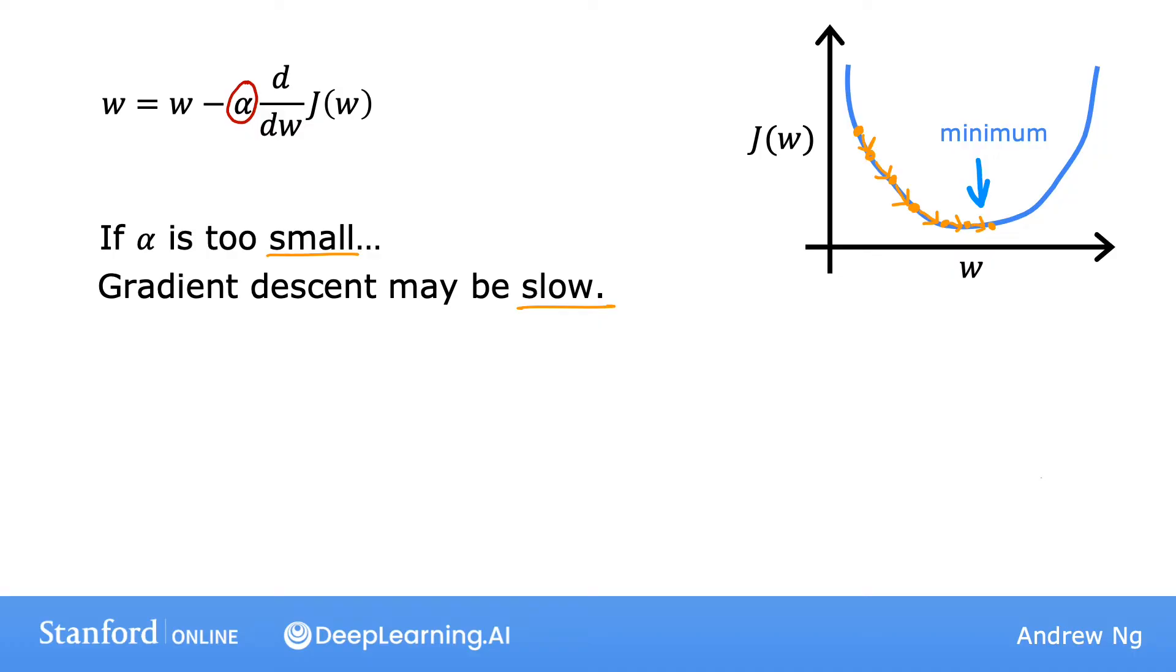Now, let's look at a different case. What happens if the learning rate is too large? Here's another graph of the cost function. And let's say we start gradient descent with w at this value here. So it's actually already pretty close to the minimum. So the derivative points to the right. But if the learning rate is too large, then you update w via a giant step to be all the way over here. And that's this point here on the function j.